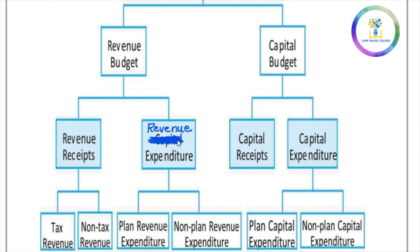Revenue expenditure includes plan revenue expenditure and non-plan revenue expenditure. Plan revenue expenditure covers expenditure under 5-year plans and assistance to states and union territories. Non-plan revenue expenditure covers unplanned spending such as defense and natural calamities. The capital budget consists of capital receipts and capital expenditure, which are also classified as planned and non-planned.